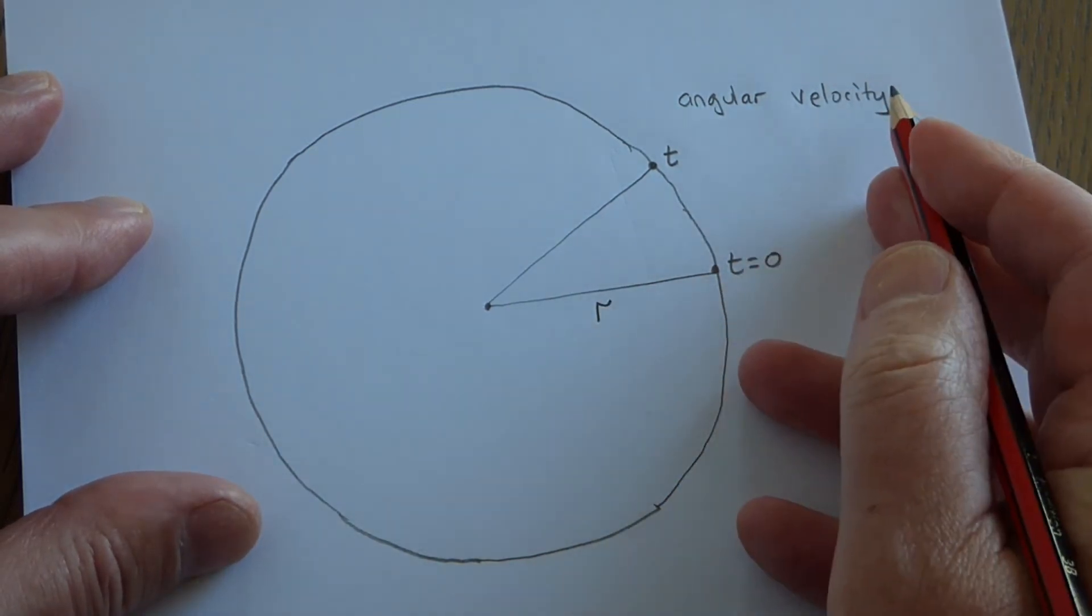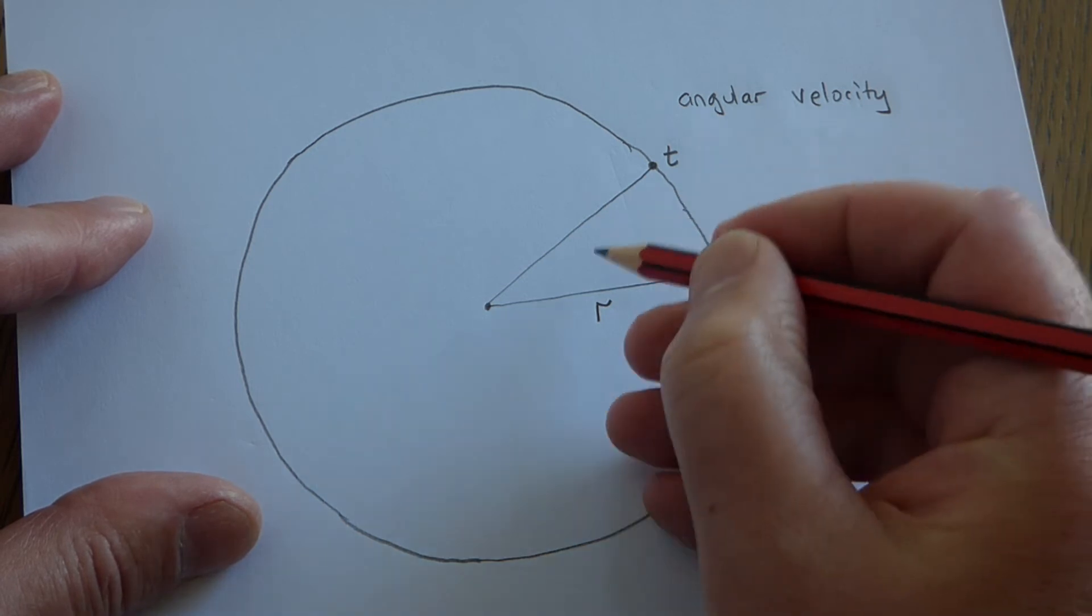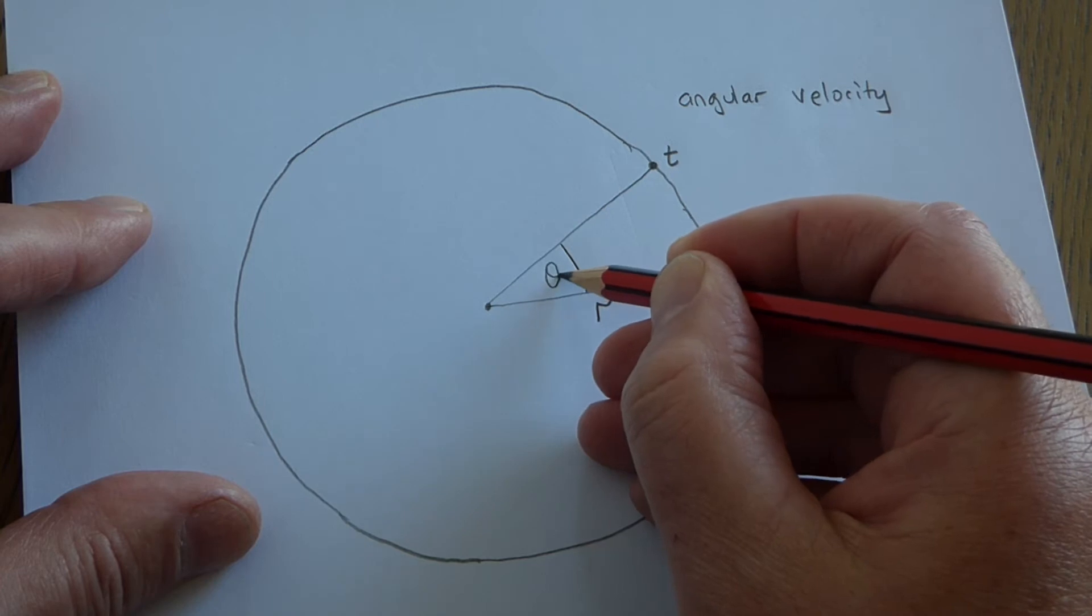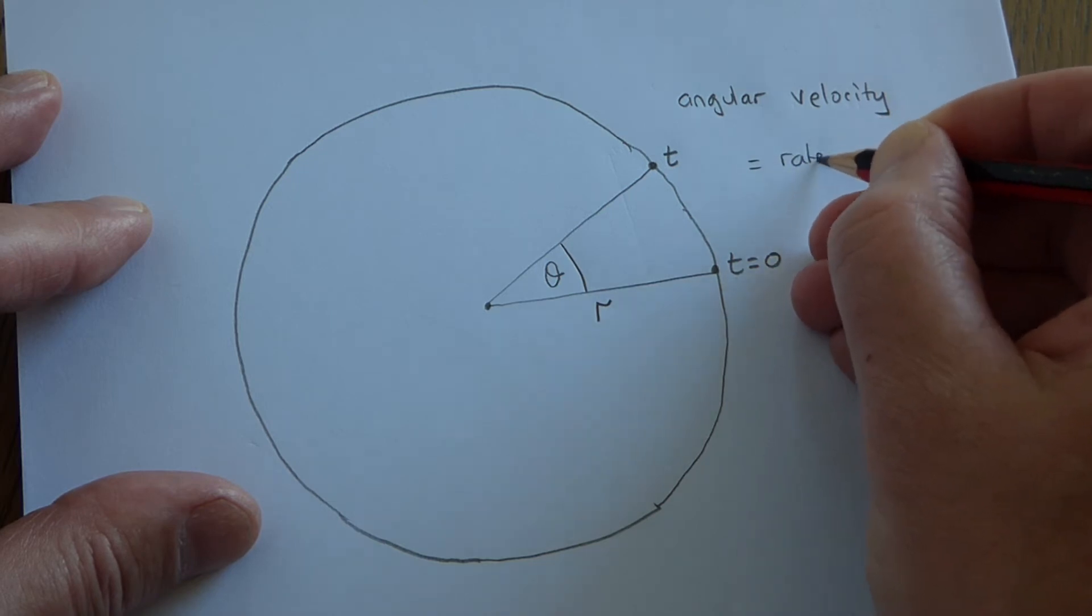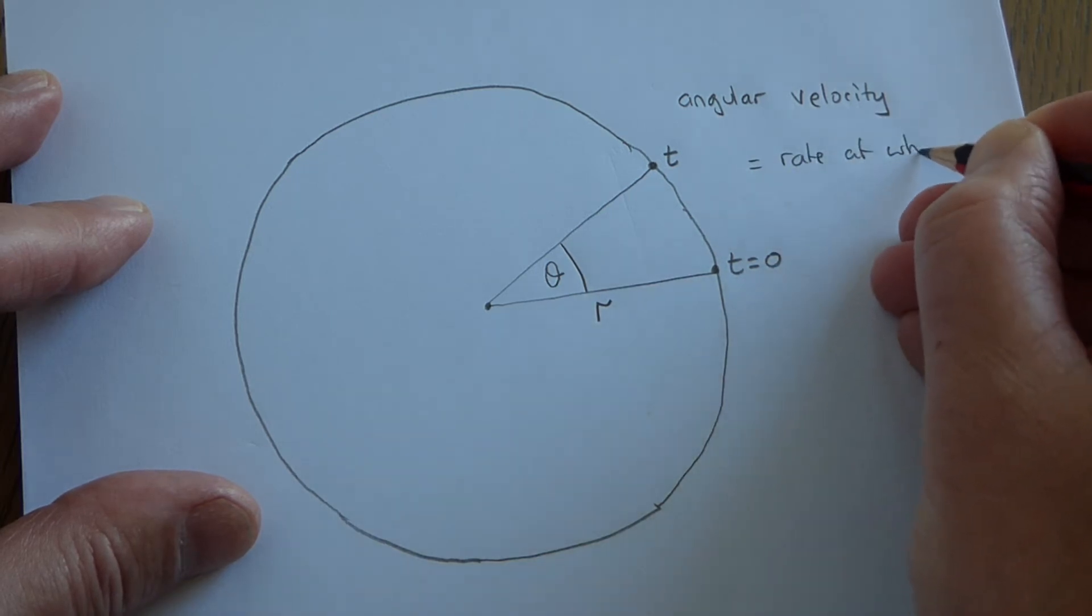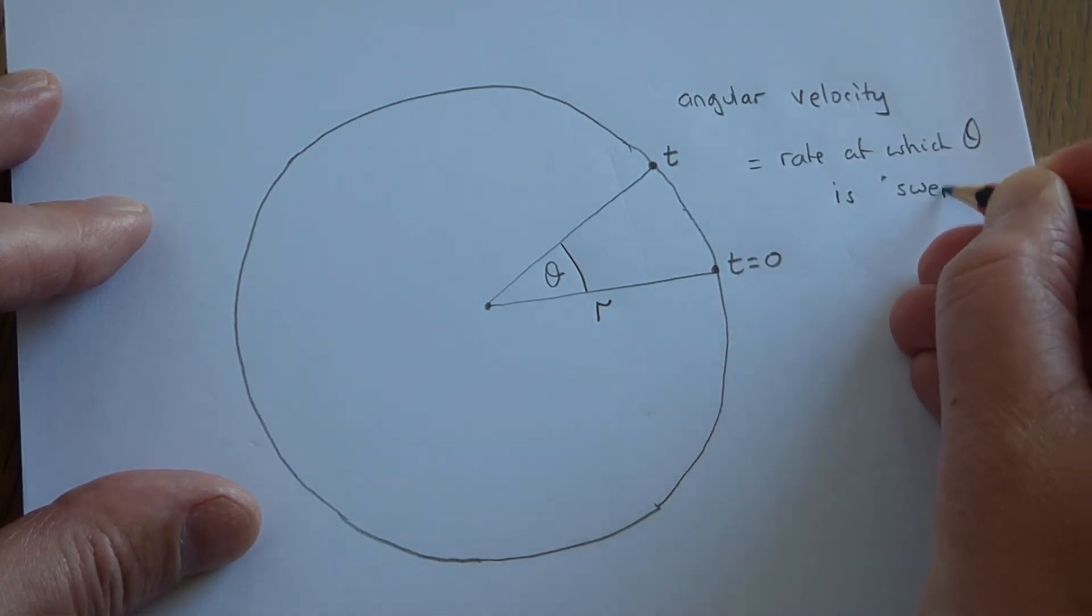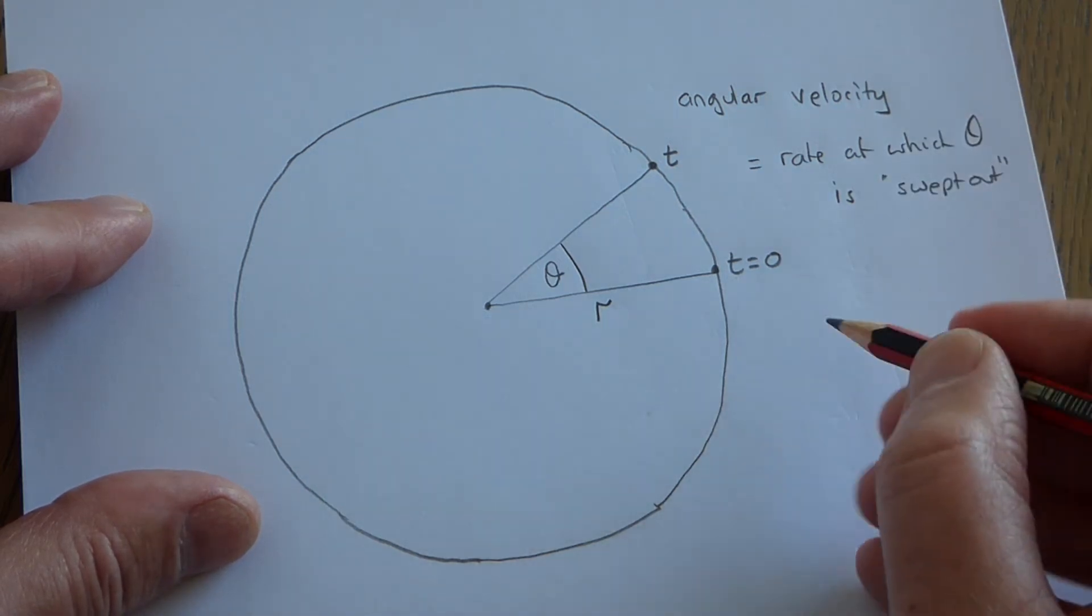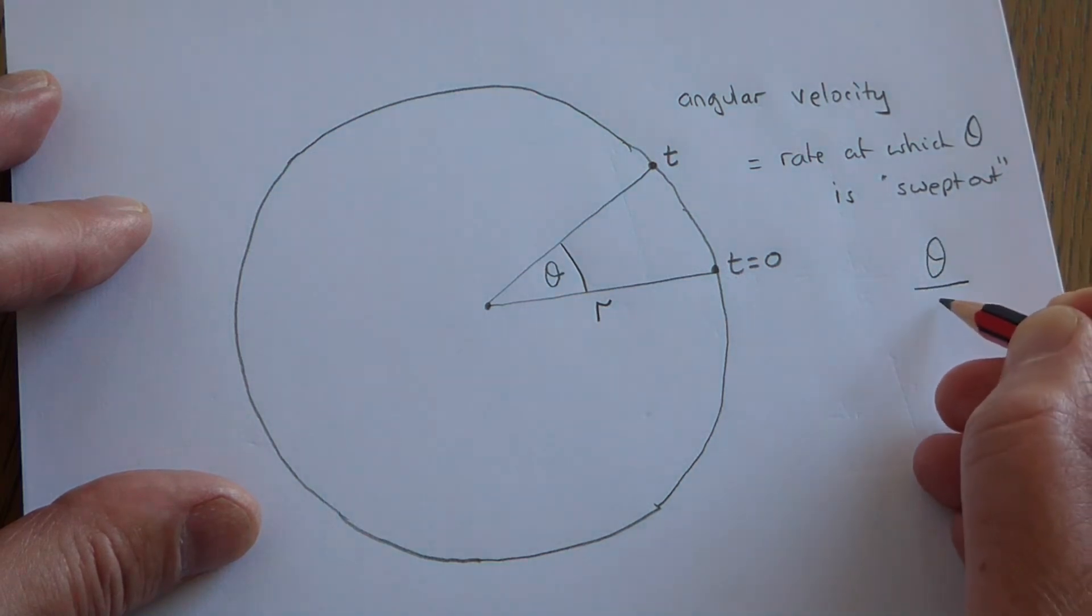Now, the angular velocity is the rate at which the object sweeps out an angle, and the angle in question is this angle here. I'll label it as theta. So if I say to you that angular velocity is the rate at which theta is swept out, then the formula for it must be the angle swept out per unit time effectively.